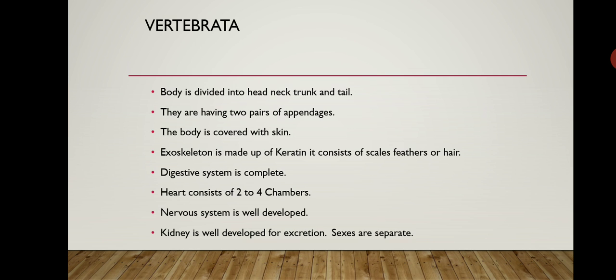Now the last sub-phylum is Vertebrata. The features of Vertebrata: the body is divided into head, neck, trunk, and tail. They have two pairs of appendages — that is, four limbs including forelimbs and hindlimbs. The body is covered with skin, and the exoskeleton is made up of keratin, consisting of scales, feathers, or hairs.